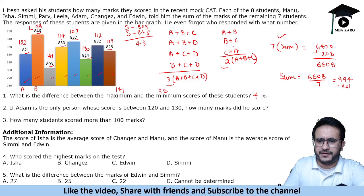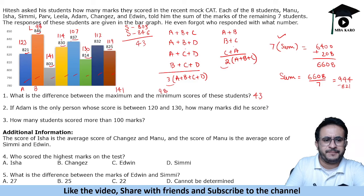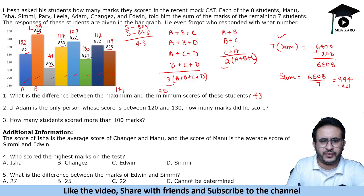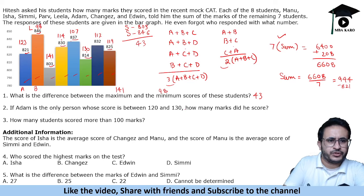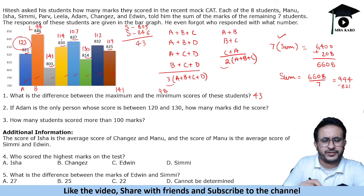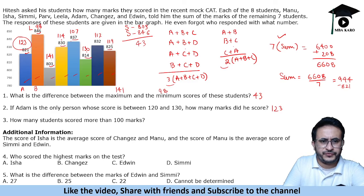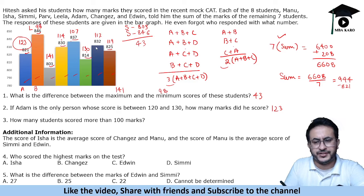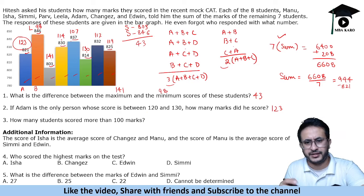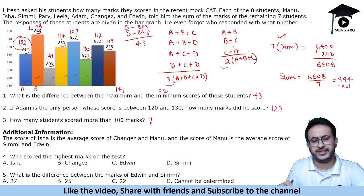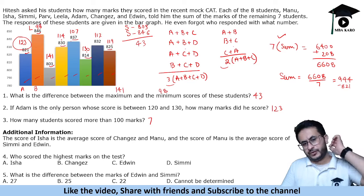If Adam is the only person whose score is between 120 and 130, how many marks did he score? Between 120 and 130, we have one score — which is 123. How many students scored more than 100 marks? Seven of these students have scored more than 100; only one student scored less than 100.